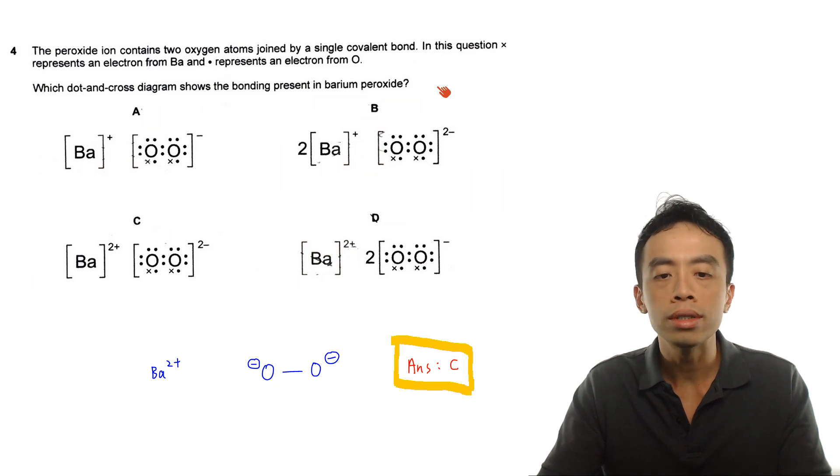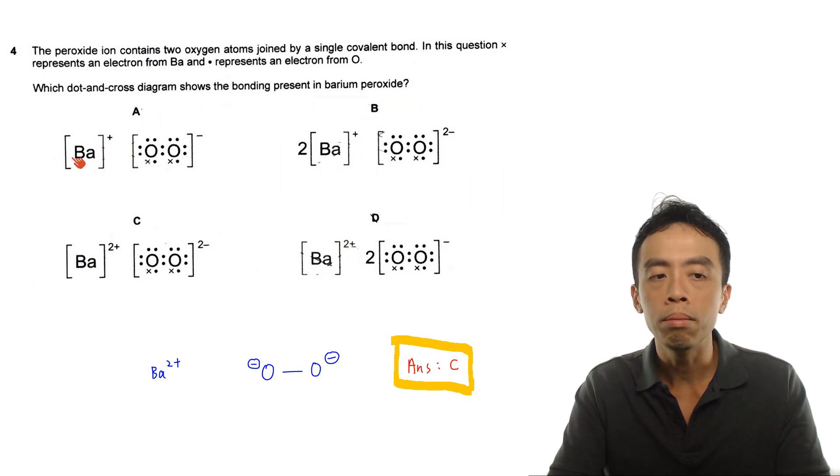So if I look at options A, B, C, D, we can straight away eliminate option A where barium, it is a positive 1 charge and B, where barium, it is also a positive 1 charge.